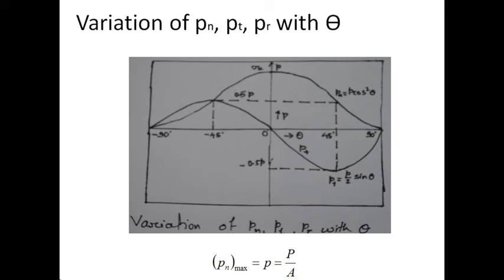When the value of theta is 90, the value of normal stress Pn will be 0. This indicates that if you cut any plane parallel to the longitudinal axis, there are no normal stresses on that plane. Hence, the maximum normal stress Pn max is equivalent to P by A, which is equivalent to the small p stress.